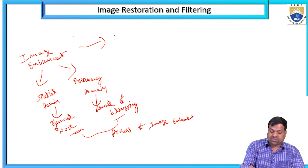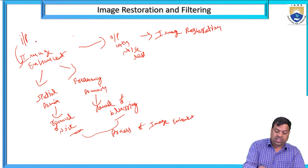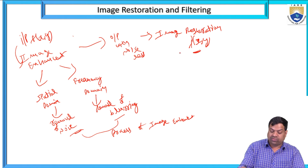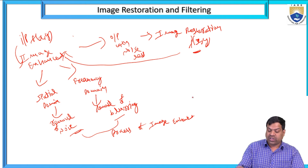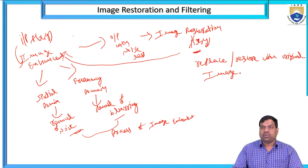After image enhancement, the output is noiseless — this output is called image restoration. For image enhancement, the input image is f(x,y) and the output image is f'(x,y). This f'(x,y) replaces f(x,y), restoring the original image. That is called image restoration: f'(x,y) = f(x,y).